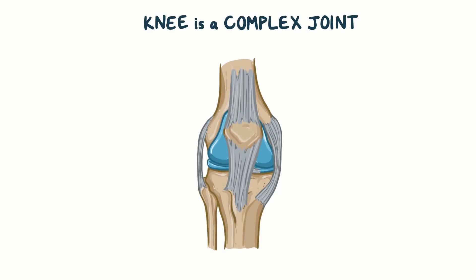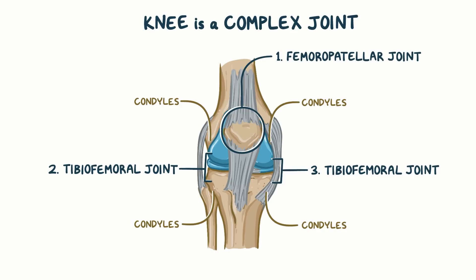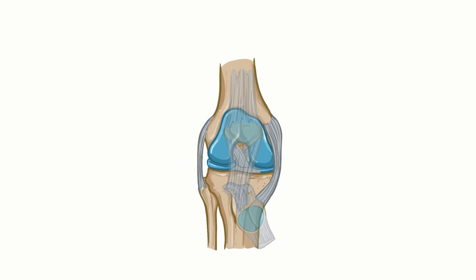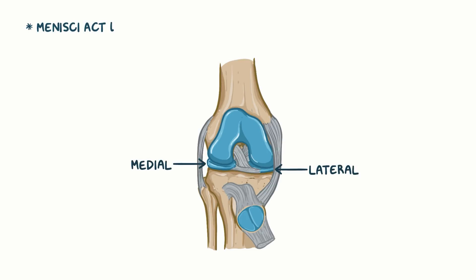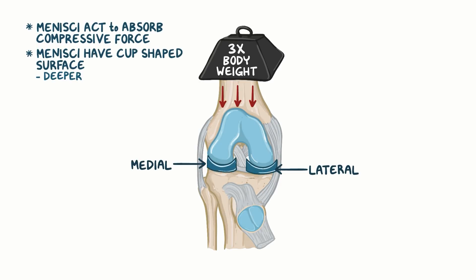The knee is a complex joint — it's a combination of three joints. These are the femoral patellar joint, between the femur and patella, and the two tibiofemoral joints, which are formed by the bony prominences, also called the condyles, of the tibia and femur. Between the femoral and tibial condyles, there are the medial and lateral menisci. The menisci act to absorb compressive force, which can reach up to three times the body weight while walking. In addition, the menisci have a cup-shaped surface which provides a deeper place for the condyles to fit in, improving joint stability.